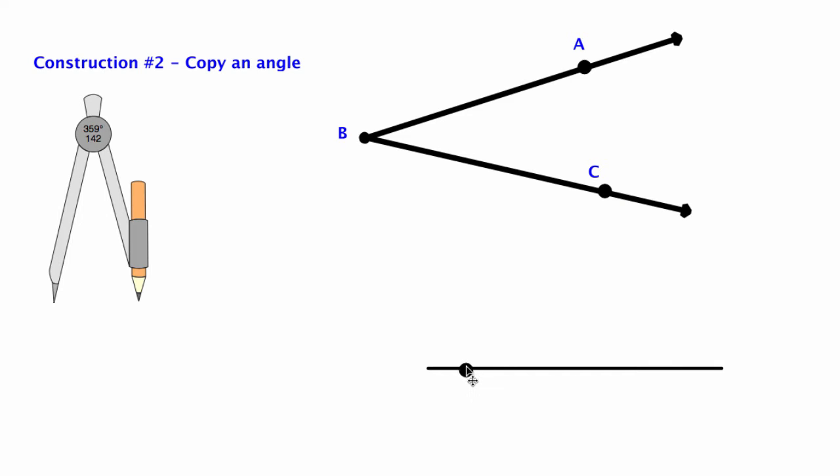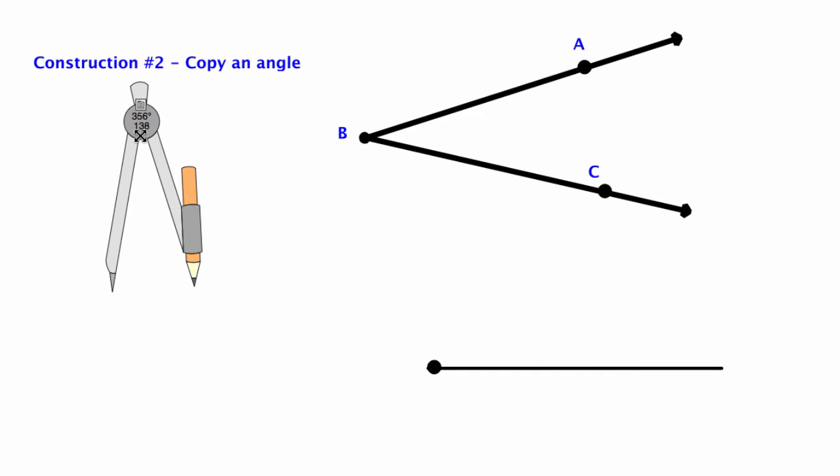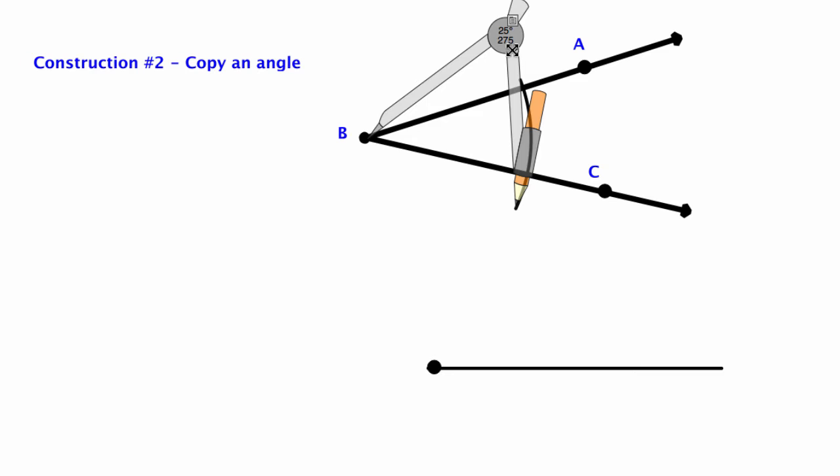I'm going to copy that angle onto my baseline. I'm going to add a vertex here and the first step is to take my compass and swing an arc across both rays. I've got angle ABC and I just open up yay big, swing across so it crosses both the rays.